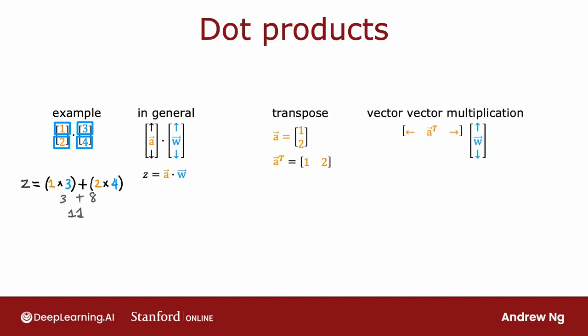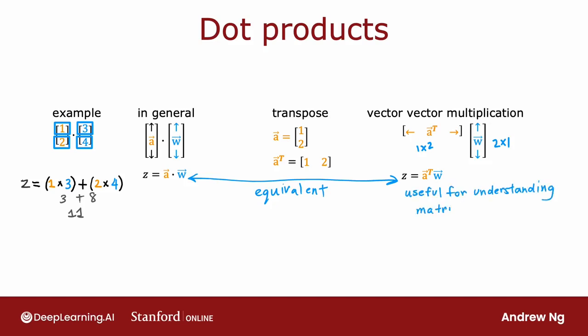It turns out that if you multiply A transpose — this is a row vector, or you can think of this as a 1 by 2 matrix — with W, which you can think of as a 2 by 1 matrix, then Z equals A transpose times W, and this is the same as taking the dot product between A and W. So to recap, Z equals the dot product between A and W is the same as Z equals A transpose, that's A laid on the side, multiplied by W. These are just two ways of writing the exact same computation to arrive at Z.